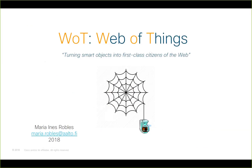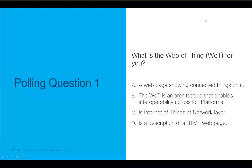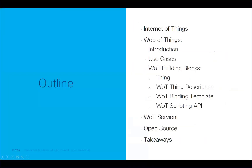I will talk to you today about the Web of Things, what it is, and what is useful. First, I'd like to ask: what do you think the Web of Things is for you? We have four options you can answer in a poll right now. First option: a web page showing connected things. Second: the Web of Things architecture that enables interoperability across IoT platforms. Third: the Internet of Things network layer. Or fourth: a description of an HTML web page. Please answer in one minute.